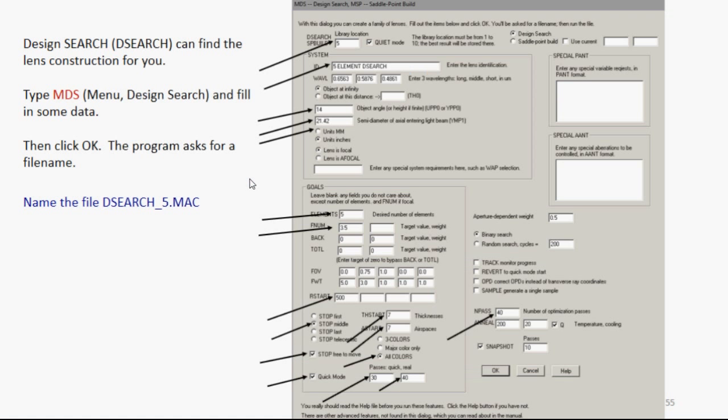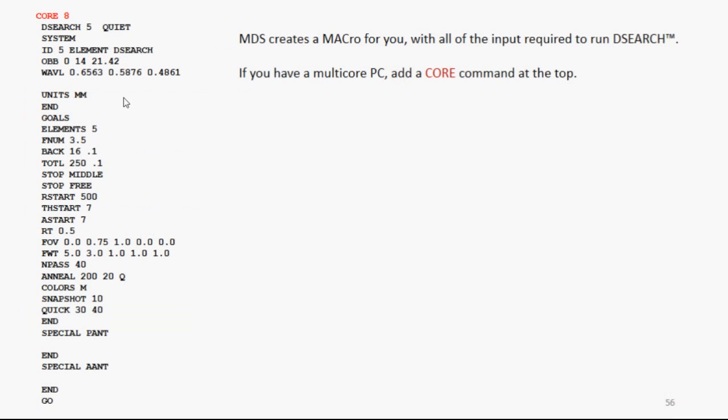You type MDS, menu design search, and you fill in some data. This tells the program what kind of lens you want. You give it an identification, semi-field angle, semi-aperture, how many elements, F number, and so on. Fill in all these boxes. And then when you click OK, it asks you for a file name. Let's give it a name, say DSEARCH5.Mac, which looks like this. It's got all the input you need to run the DSEARCH program to get exactly the lens that you asked for. And if you have a multi-core PC, you want to put a core command at the top. Makes it run much faster.